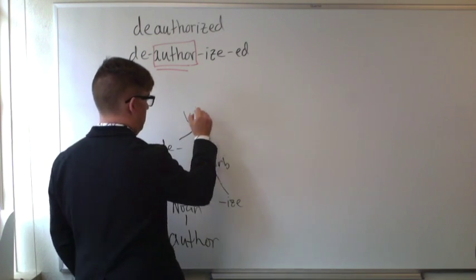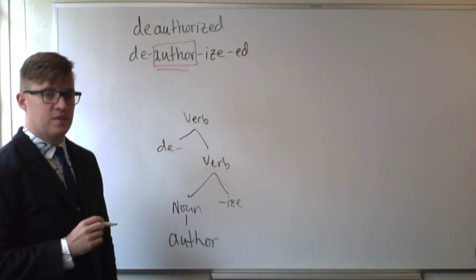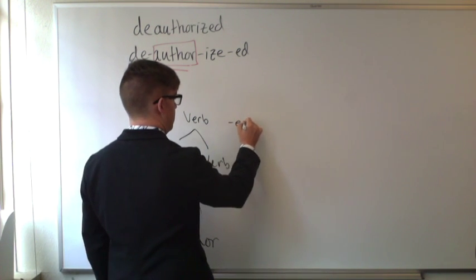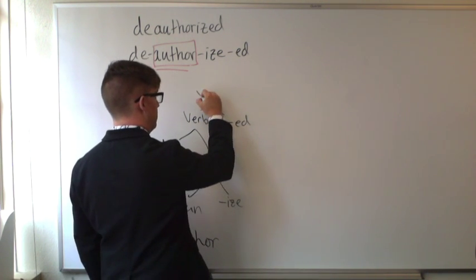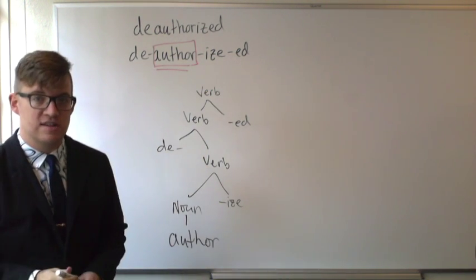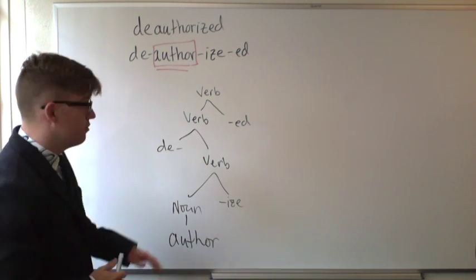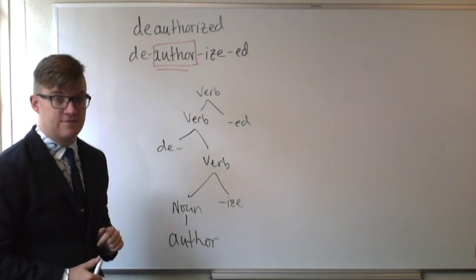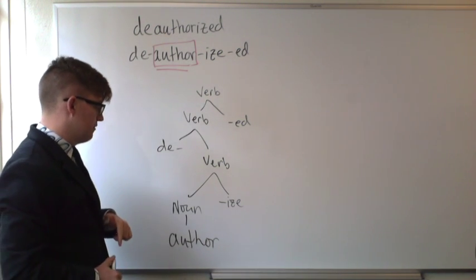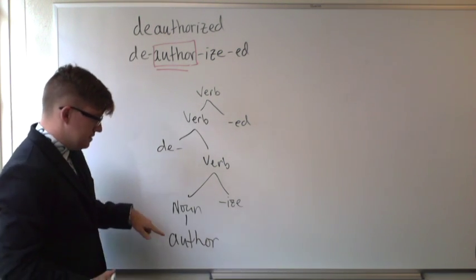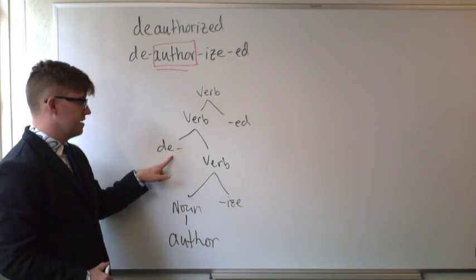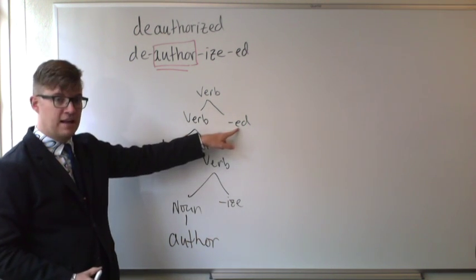Finally, we combine all of this with the past tense '-ed' form. Since inflection never changes category, we know right away that this final thing is a verb. So 'deauthorized' is a past tense form of a verb, starting with the noun 'author', combining with '-ize', combining with 'de-', and then combining with '-ed' when we're all done.